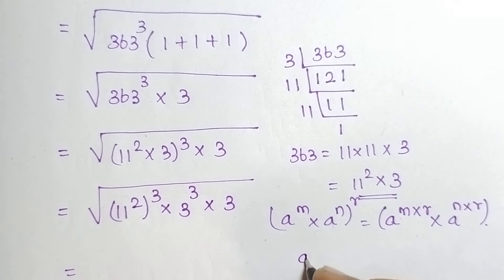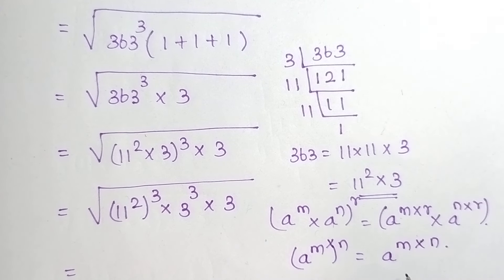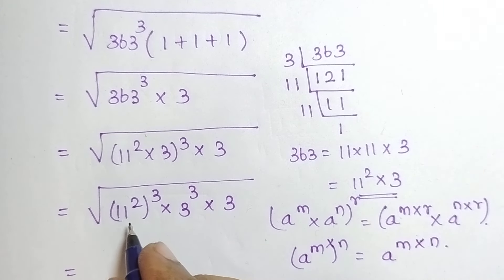That is, A power M, the whole power N can be written as A power M, powers get multiplied, A power M into N. So, just apply this here. Therefore, this power get multiplied.